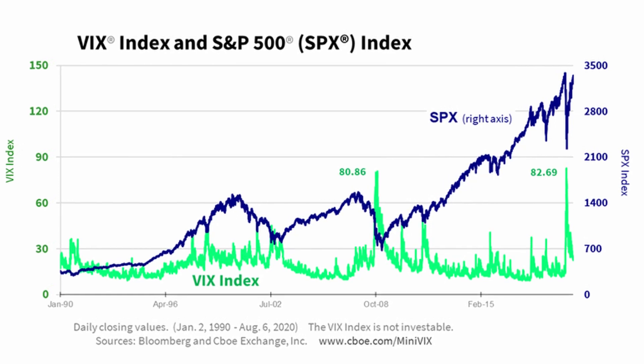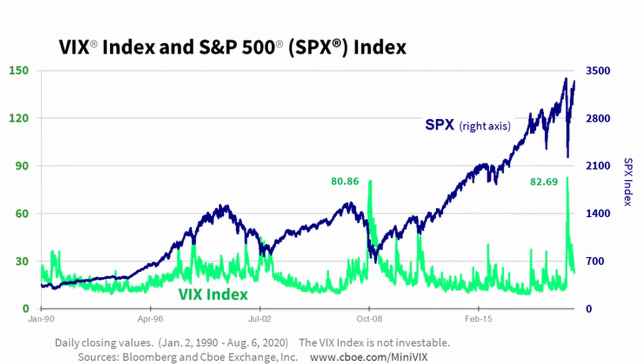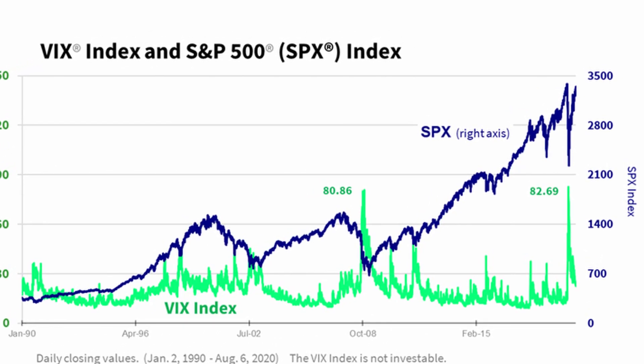Investors look to the CBOE Market Volatility Index, or the VIX, to determine the implied volatility of the overall market. This index tracks the implied volatility of the S&P 500 options. If the VIX is rising, demand for options is increasing, which will make options more expensive. If the VIX is falling, there is less demand for options and options prices tend to fall.